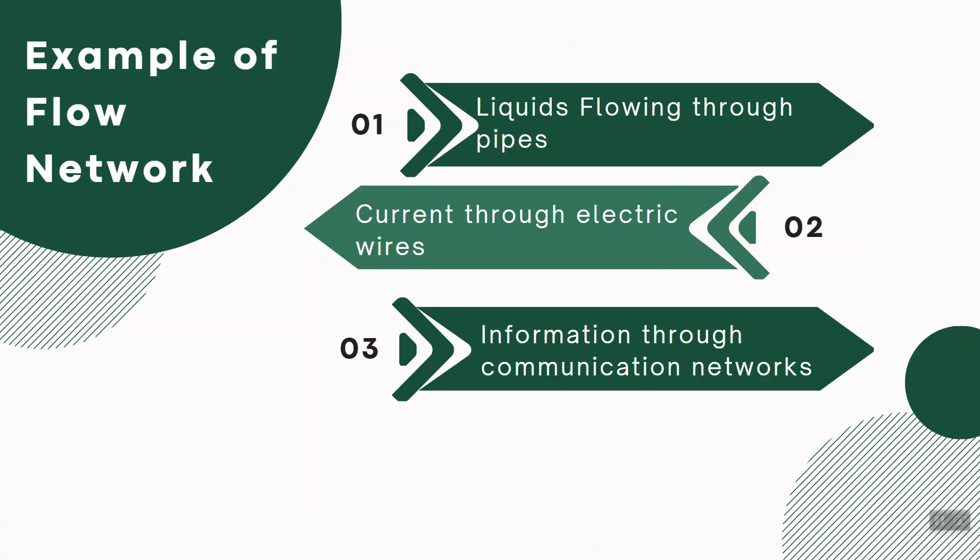Examples of flow networks include liquids flowing through pipes, current through electrical wires, and information through communication networks. Edges connect one vertex to another, and in a flow network each edge has a capacity — for example, an amount measured in amperes.